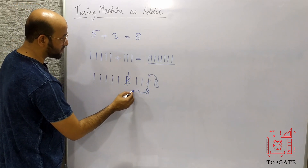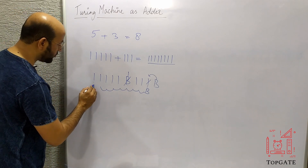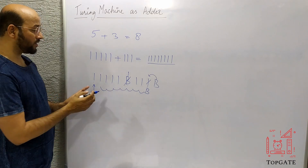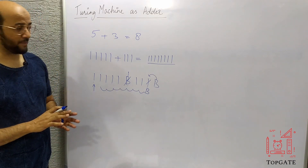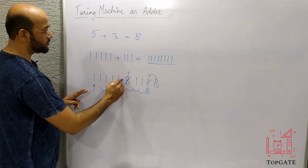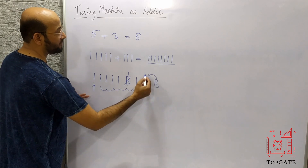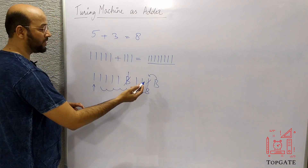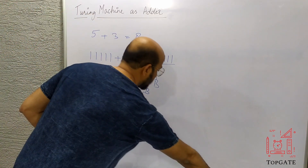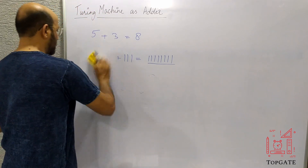That is the output of five plus three. From here, take a left turn, skip all the ones, and the pointer should finally point to the first one of the output — the place where the output is displayed on the input tape. So: start, go right, change B to one, go right, take a left turn, change that one to B, and come back to the initial position.